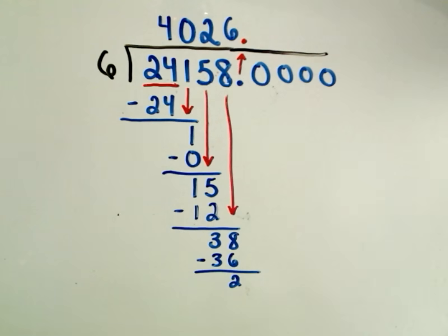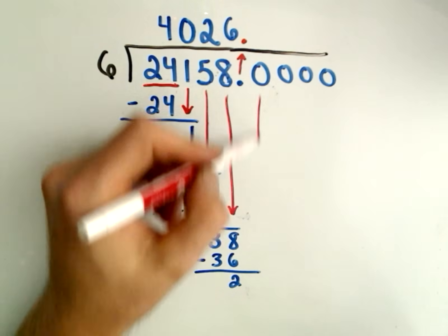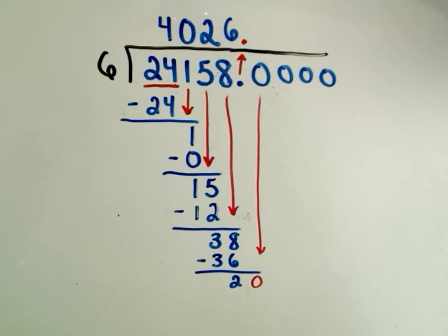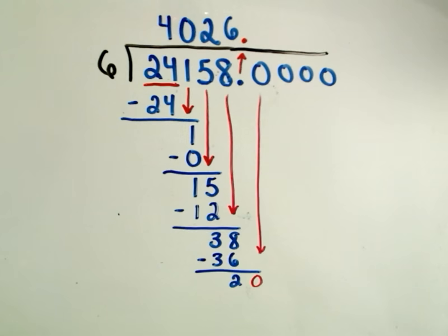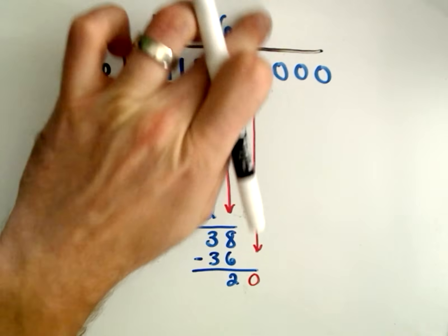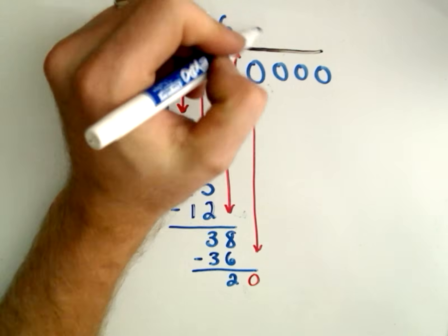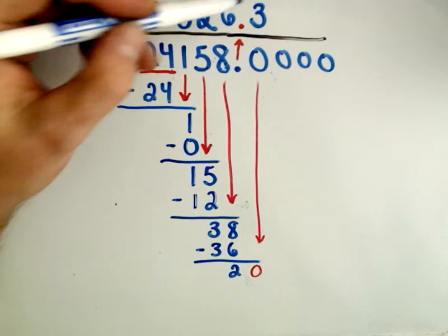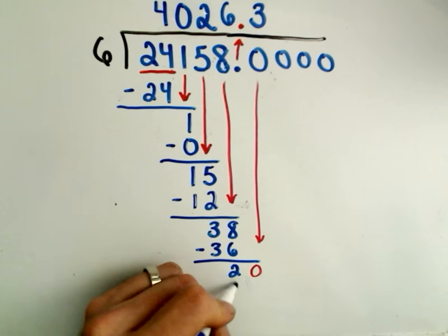Okay, so what I'm going to do is that's where I was getting that extra zero from. I'm going to drop down this next zero and get the number 20. So will 6 go into 20? The answer is yes, 6 will go into 20 three times. Whoops, my black pen's running out. Three times. And then I do the same thing, I just multiply. So 3 times 6 is 18.